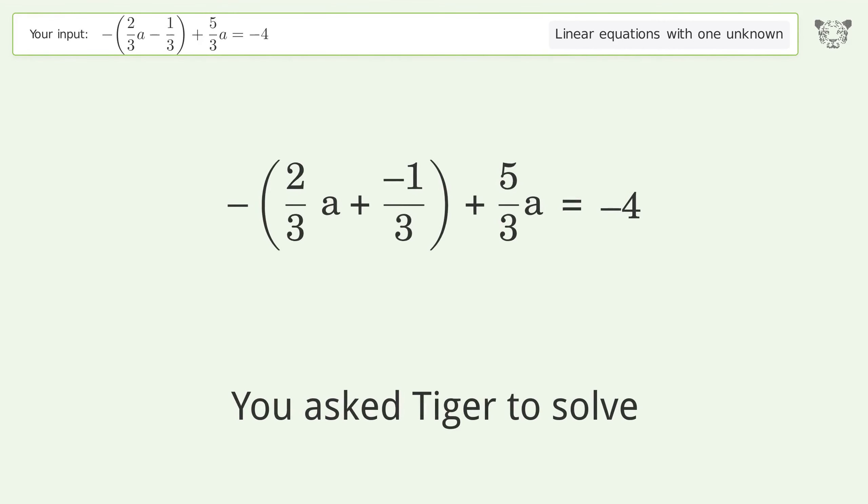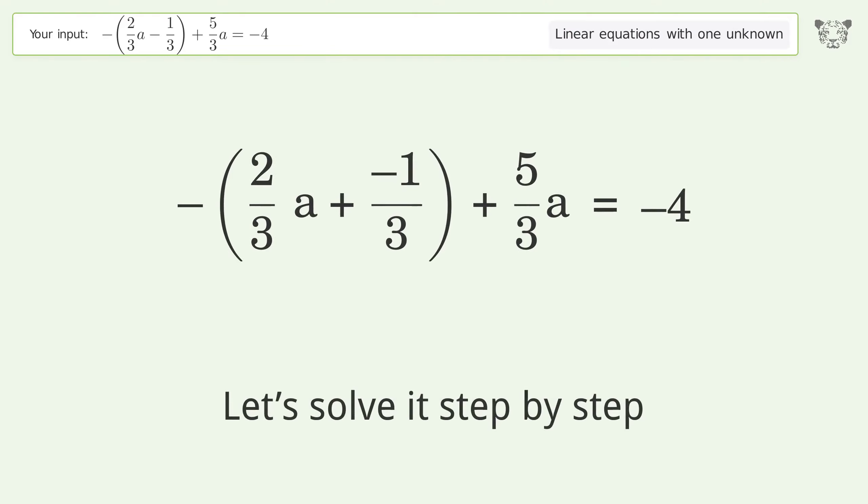You ask Tiger to solve this. It deals with linear equations with one unknown. The final result is a equals negative 13 over 3. Let's solve it step by step.